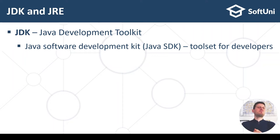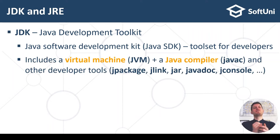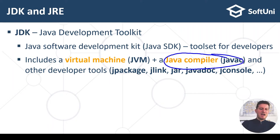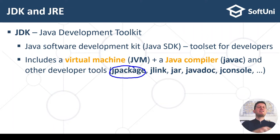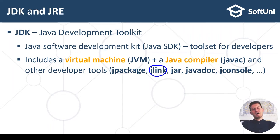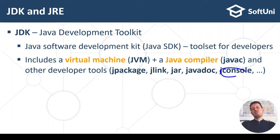JDK includes the virtual machine — the environment which can run compiled Java code — also the Java compiler JavaC, and other developer tools like jpackage, which can make executable code from your program (for example a Windows .exe file), jlink, which can package a subset of the Java platform needed to run your code, JAR, which deals with Java archives, javadoc, which generates Java documentation, jconsole, which monitors Java processes, and many others.